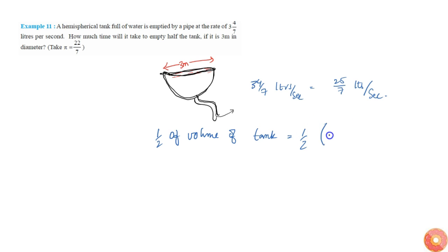The volume of tank is simply volume of hemisphere, which is 2/3 π r³. We know r is simply 3/2 because diameter is 3, so 3/2 into 3/2 into 3/2.